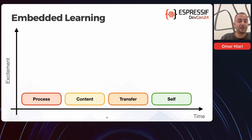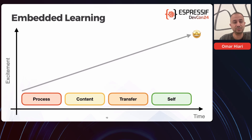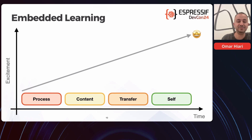If we look at these stages along with excitement levels over time, an ideal case would be something where excitement keeps on growing with time until students find their passion — this being the highest level of excitement. However, this is typically not a linear line; it has its ups and downs, but the idea is that the trend is a growing one.